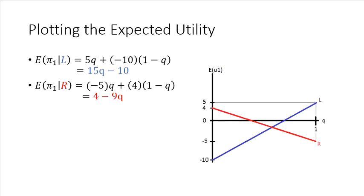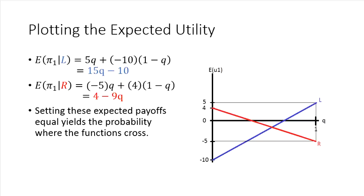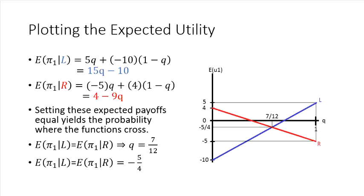Likewise, we can plot the other expected payoff function that corresponds to when player two is playing R. And if we were to set these expected payoffs equal, we can figure out exactly what that probability is right where they cross, which turns out to be 7 over 12. And if you were to plug 7 over 12 back into either expected payoff function, it doesn't matter since we just set them equal, you can figure out the expected utility that corresponds to that particular choice of probability by player one.